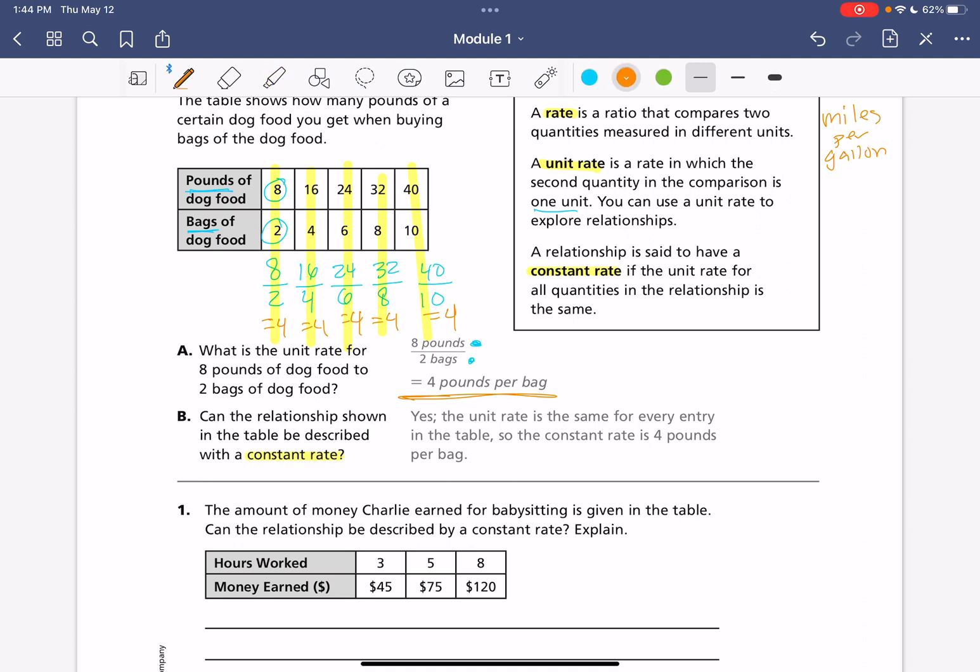So yes, the unit rate is the same for every entry in the table. So the constant rate is 4 pounds per bag.